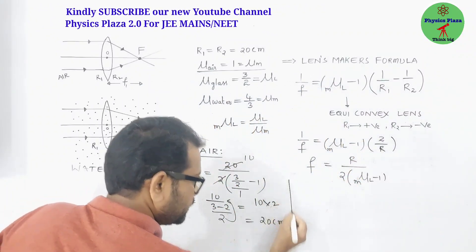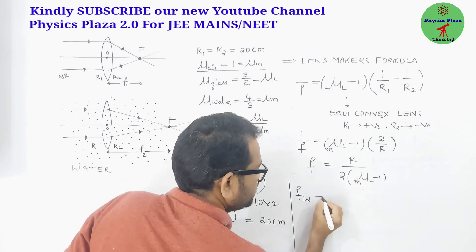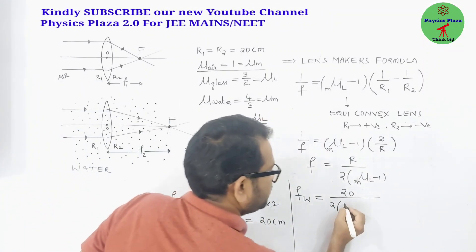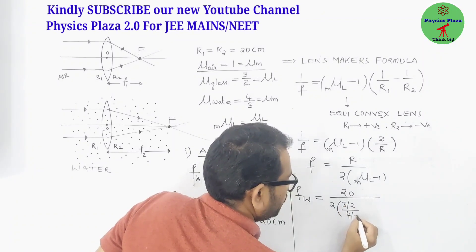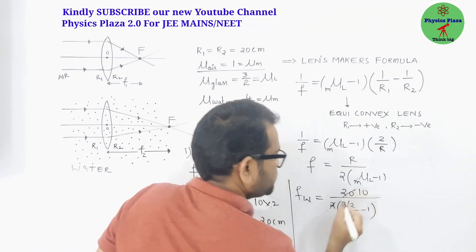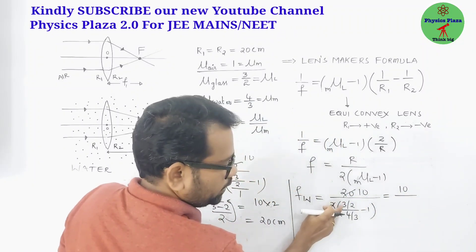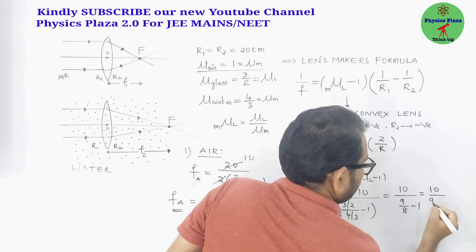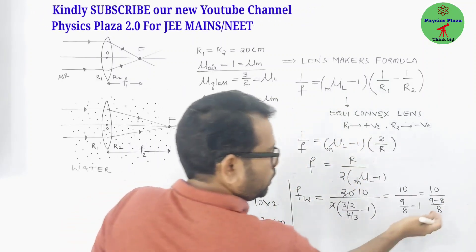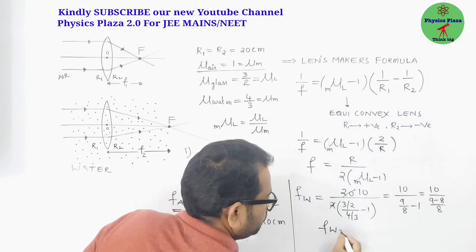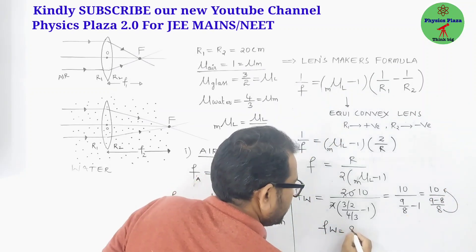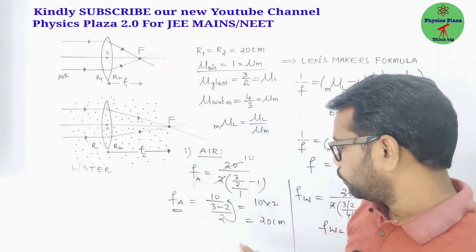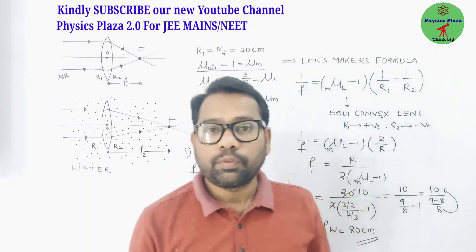Now let us calculate the focal length when the lens is placed in water. With R = 20 cm, μ_L = 3/2, and μ_m = 4/3 for water: f_water = (20/2) × 1/(3/2 ÷ 4/3 − 1) = 10 × 1/(9/8 − 1) = 10 × 1/(1/8) = 10 × 8 = 80 centimeters.